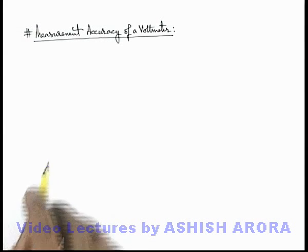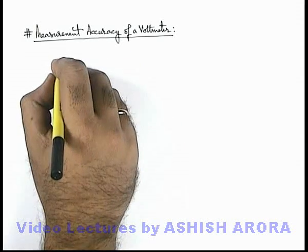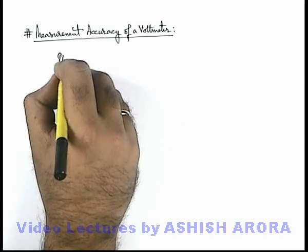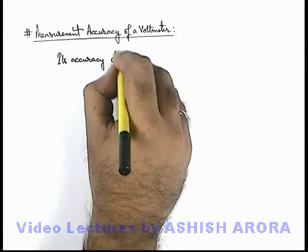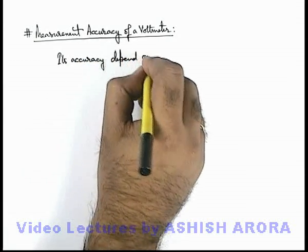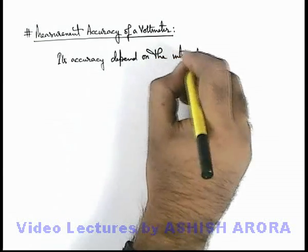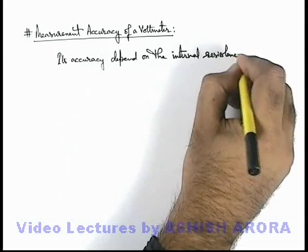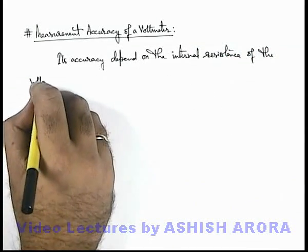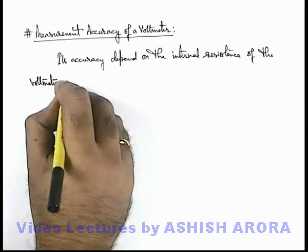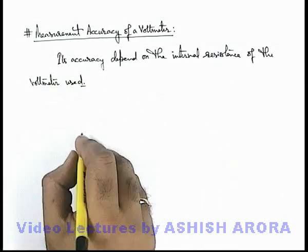Let us discuss the measurement accuracy of a voltmeter. About a voltmeter, we can write that its accuracy depends on the internal resistance, which is actually the coil resistance of the voltmeter. We can understand this with the help of a simple example.